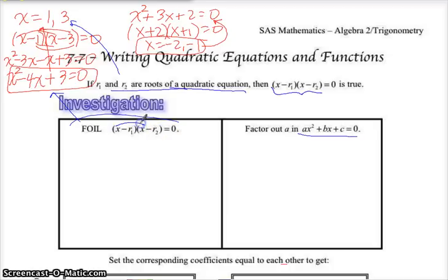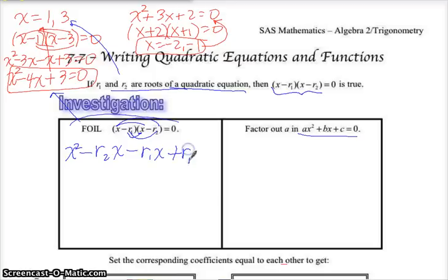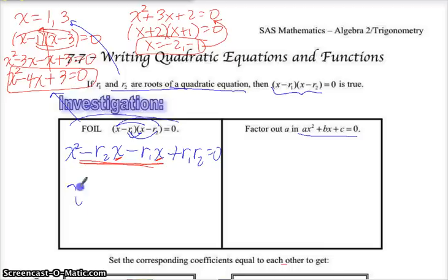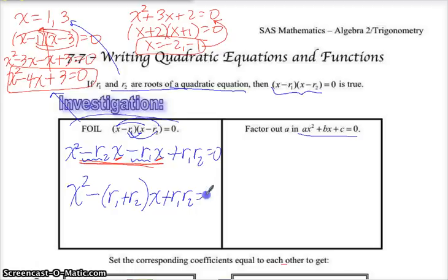Let's FOIL the left-hand side. x times x is x squared. x times negative r₂ is negative r₂x — let's put the coefficient in front. Then we do the inside, which is r₁ times x. And finally, negative r₁ times negative r₂ is just r₁ times r₂ — it turns into a positive. To combine like terms, those are the x terms: x squared, and then we have negative r₁ and negative r₂. So if I put a minus sign and combine r₁ and r₂ with x on the outside, and then r₁ times r₂ stays the same.